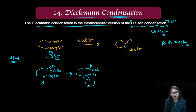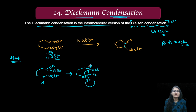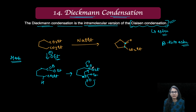The ester enolate — the negative charge falls back and from this carbon, there is going to be an attack on the carbonyl carbon of the ester. When the bond opens up and falls back, you are going to have the removal of the ethoxy group.